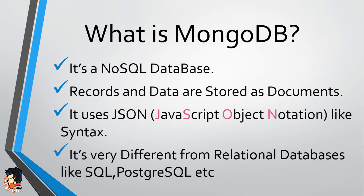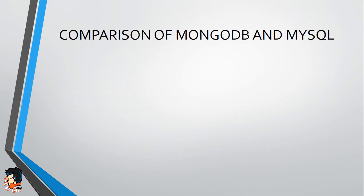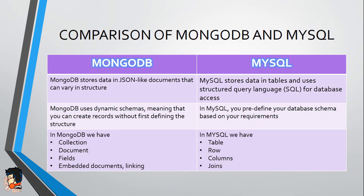Let's now see a comparison between MongoDB and SQL. In MongoDB, data is stored in JSON-like documents, while in SQL data is stored in tables and data manipulation is done by structured query language, which is the reason it is called SQL. Next, MongoDB uses dynamic schemas, simply meaning that you don't have to design a schema at the beginning, which in MySQL you have to do.